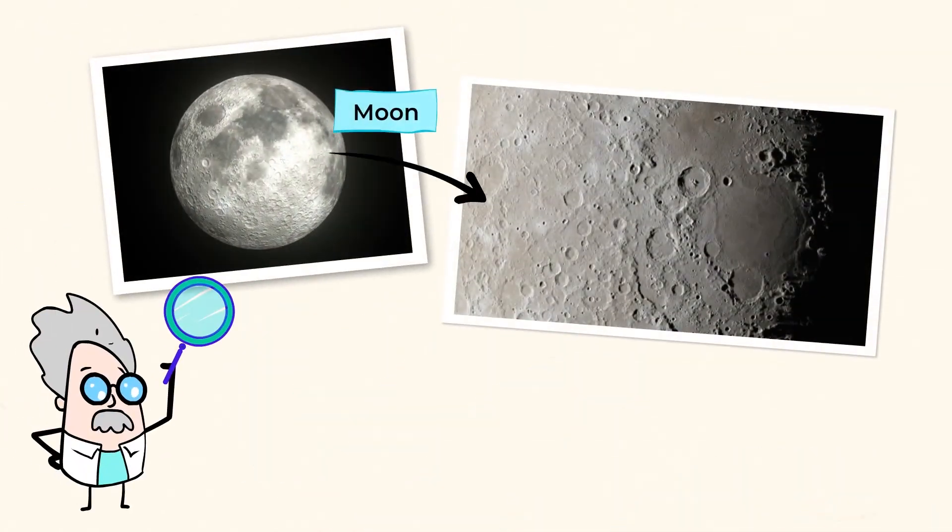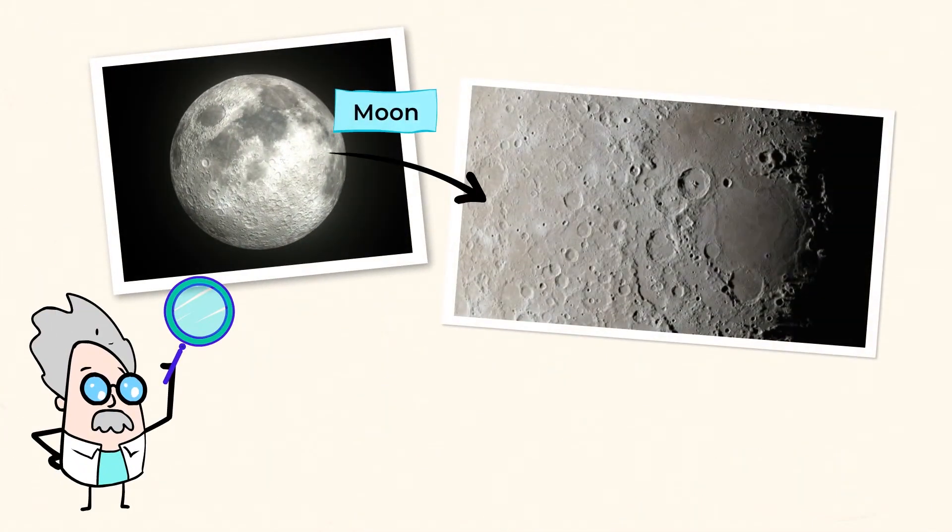Take a look at the surface of the moon. What do you notice? It's very unique from the surface of Earth. The moon is covered in huge craters. These are large holes on the surface of the moon. They look like giant lakes with no water in them.